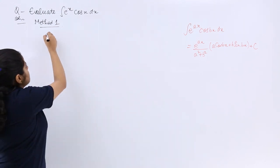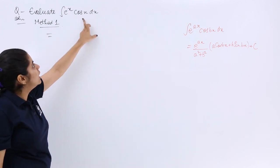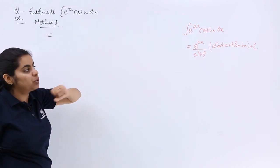So what should the result be? The result should be accordingly e raised to the power ax means a is equal to 1, cos bx means b is equal to 1.